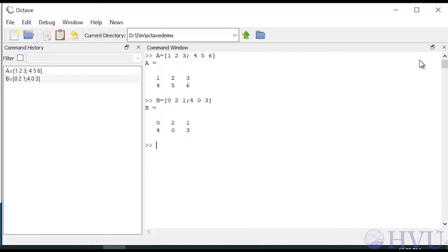We can use dot times to multiply these two together. If we do that, we get 0, 4, 3, the second row is 16, 0, 8. Each element is the product of the corresponding elements in the operands.